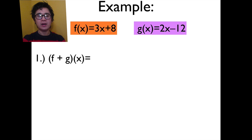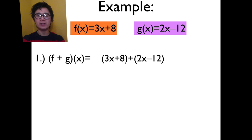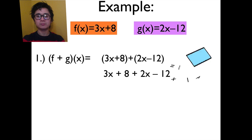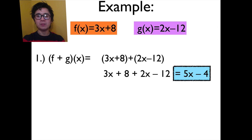Let's say we have f plus g of x. Evaluating f plus g of x is similar to addition of polynomials. We know that f of x is equal to 3x plus 8 and g of x is 2x minus 12. Adding them together, we'll have 3x plus 8 plus 2x minus 12. And by combining like terms, f plus g of x is simply 5x minus 4.